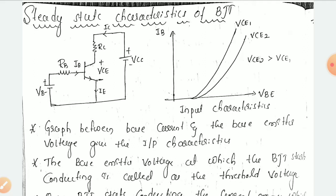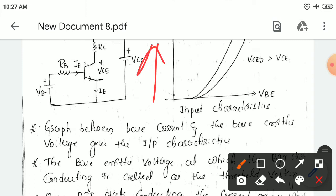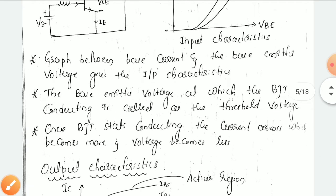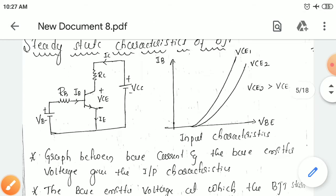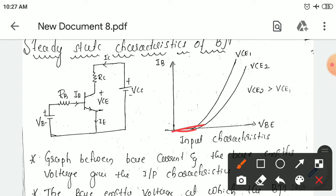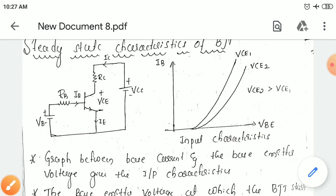The input characteristics is the graph between the base current and the base emitter voltage. You can see here: base current IB along the y-axis and base emitter voltage along the x-axis. This is the graphical representation. The base emitter voltage at which the BJT is conducting is called as the threshold voltage. Initially there is no current flow; once the base emitter voltage we are applying is sufficient, then the transistor starts conducting. That point is called as a threshold voltage of your BJT.